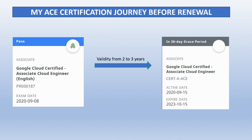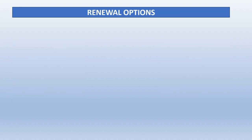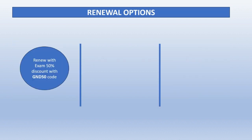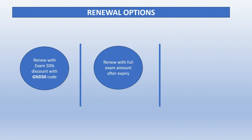Before that I have to give this exam. I got a 30-day notice period from Google. So what options do I have? Option one: I can do this exam before expiry — I got a 50% discount from Google and I have to use a code. Second: maybe I don't have time and I'm okay to let this exam expire, then I have to pay the full amount.